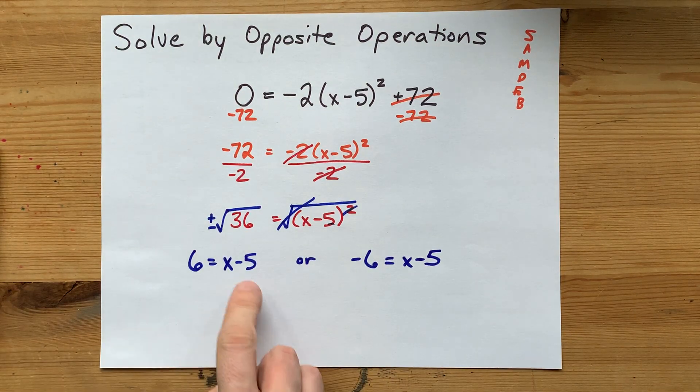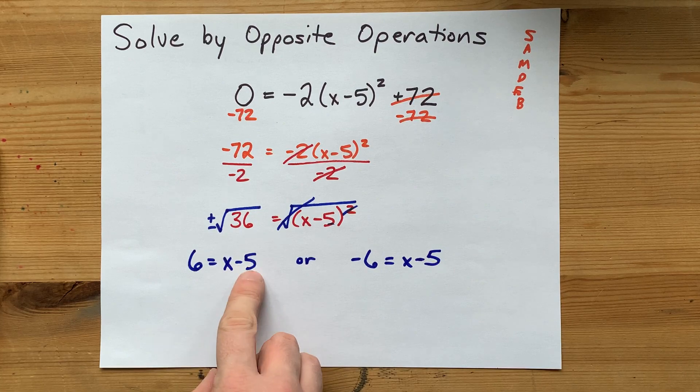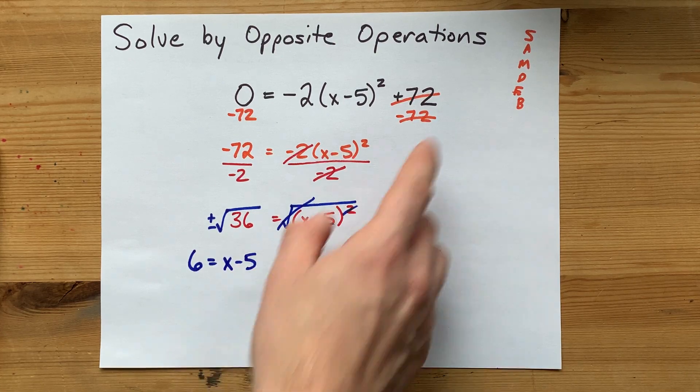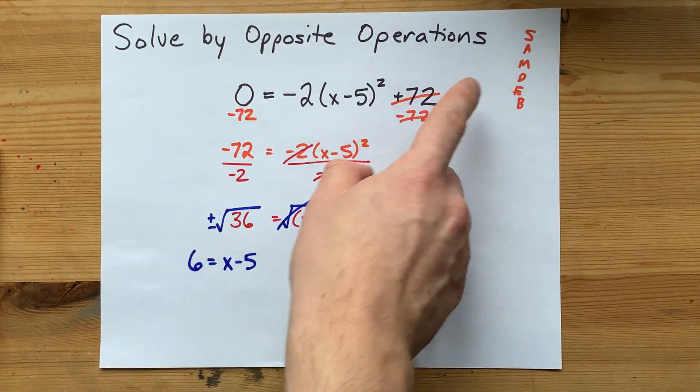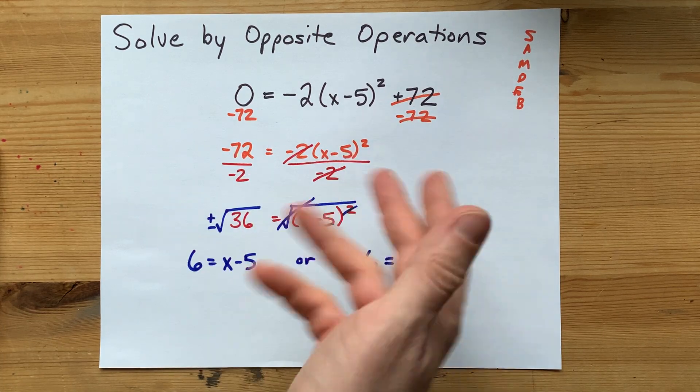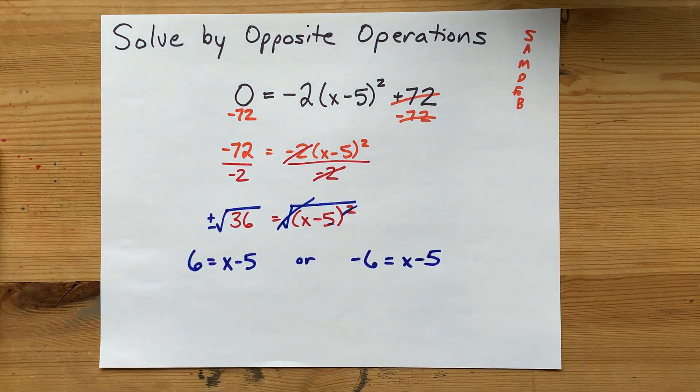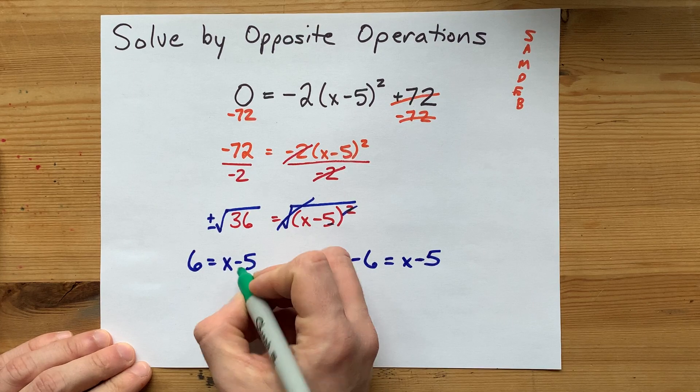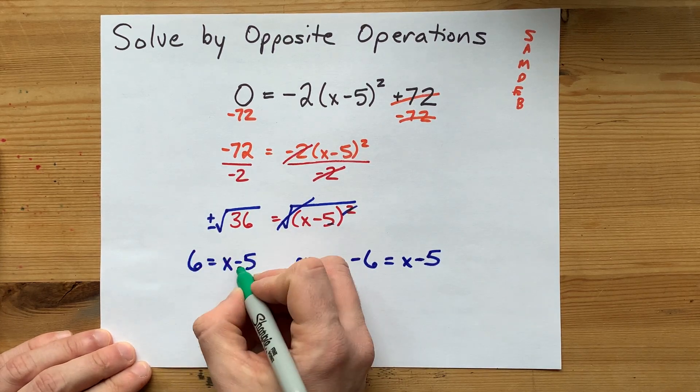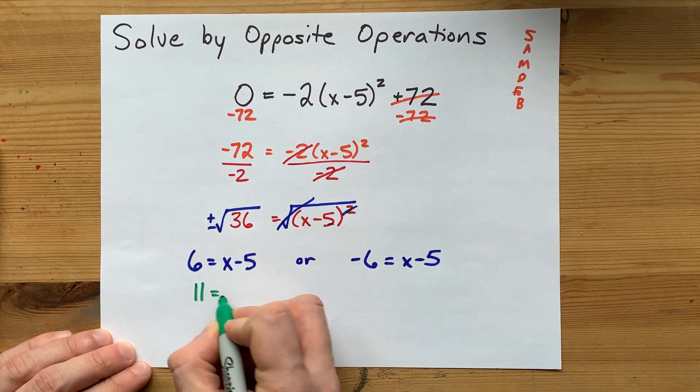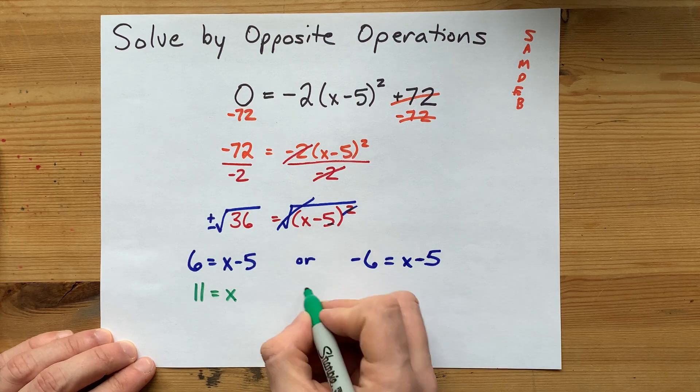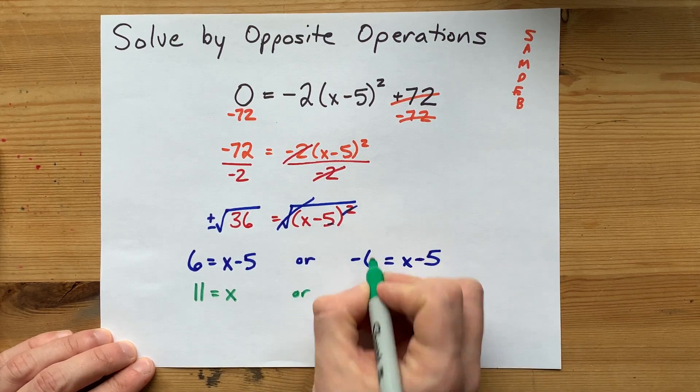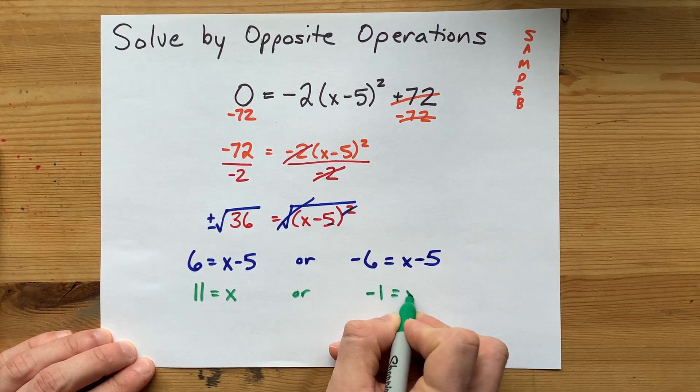Lastly, we're going to undo the minusing of 5. Now I know subtraction came first, but this was inside brackets, that's why it got left till the end. You undo minusing 5 by plussing 5 on the other side. I got x to be either positive 11 or plus 5, negative 1.